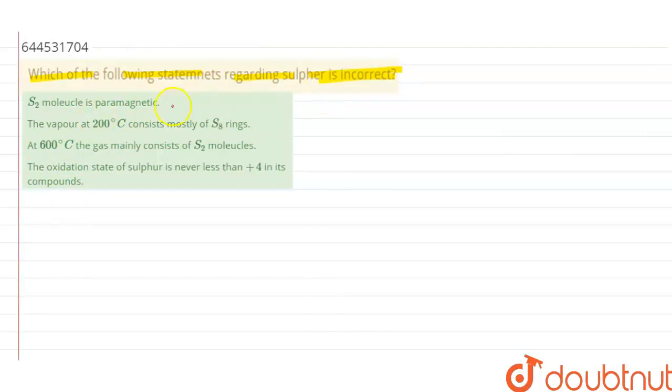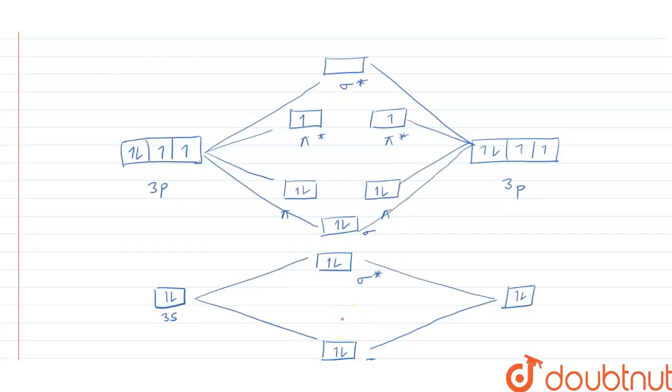The first statement is S2 is paramagnetic in nature. For this, let's draw the molecular orbital energy level diagram. By looking at the molecular orbital energy level diagram of sulfur, you can see this is the molecular orbital energy level diagram for the S2 molecule. Here, one is the atomic orbital.